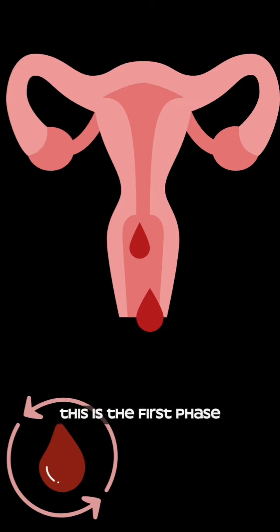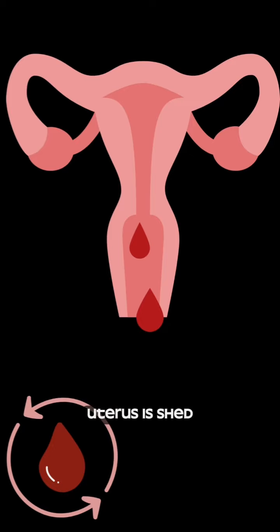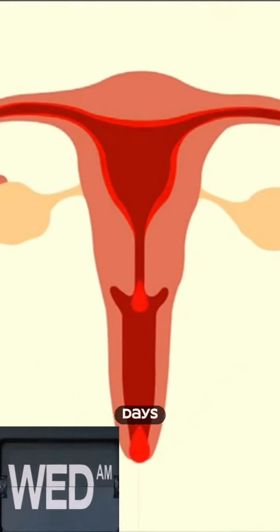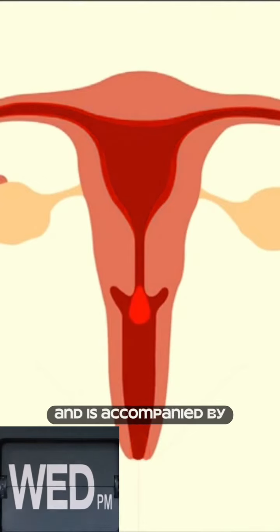Menstruation — this is the first phase, where the lining of the uterus is shed. It may last for about 3 to 7 days and is accompanied by bleeding.